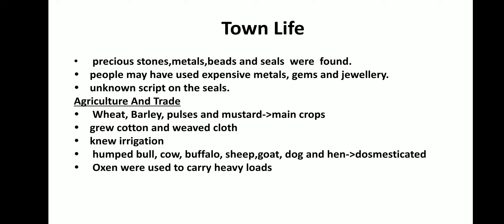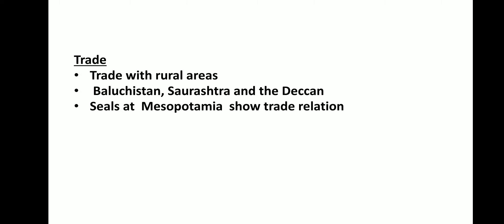Their main crops were wheat, barley, pulses, and mustard. They also grew commercial crops like cotton and weaved cloth. They knew irrigation since these civilizations were on the banks of rivers like the Indus and its tributaries. Domesticated animals included hump bull, cow, buffalo, sheep, goat, dog, and hen. Oxen were used for transport to carry heavy loads. They had trade relations with rural areas like Balochistan, Saurashtra, and the Deccan. Indus Valley seals were found at Mesopotamia, indicating trade relations between the two civilizations.